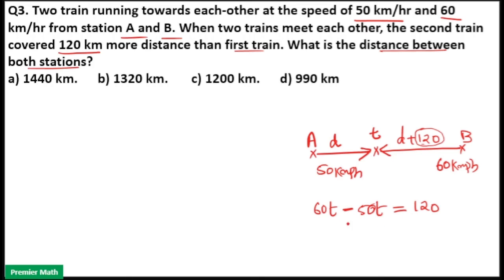This is the distance formula. Distance traveled by the second train minus distance traveled by the first train is 120 km. That means 10T equals 120 km, and T equals 12 hours. So time to meet is 12 hours.